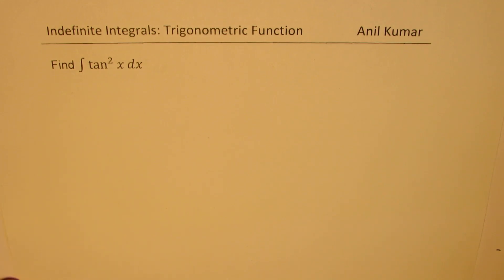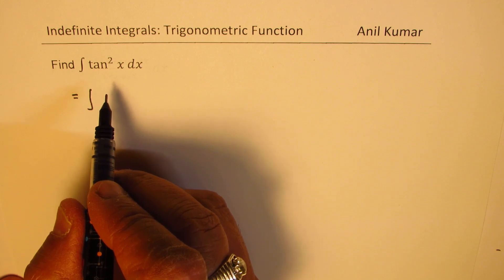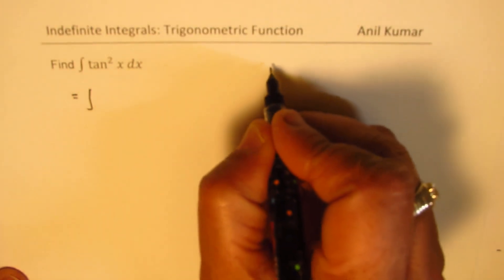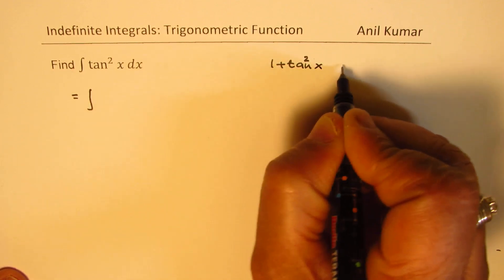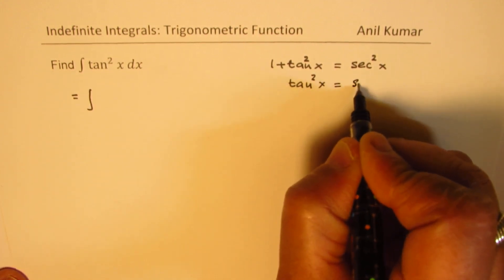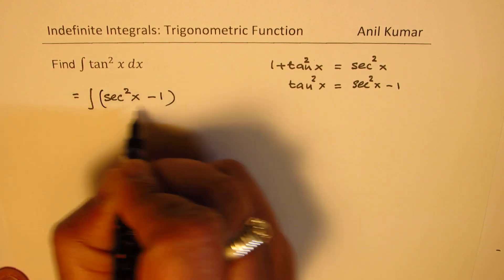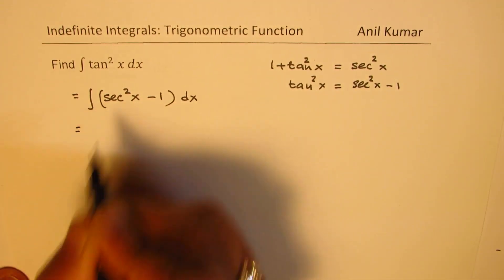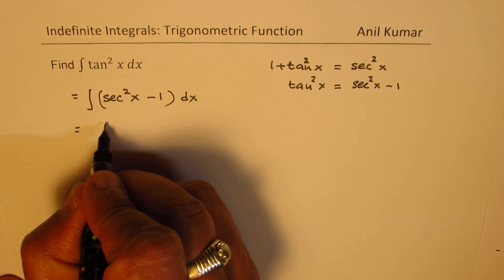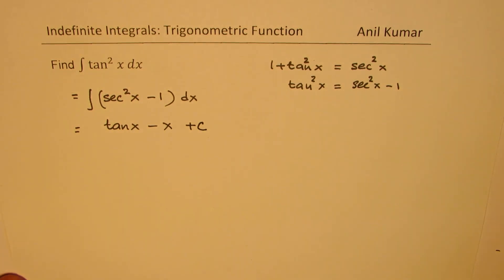Now let's look into part (c): find the integral of tan squared x. Here we use the Pythagorean identity: since 1 + tan squared x = secant squared x, tan squared x can be written as secant squared x minus 1. So we replace it with the integral of (secant squared x minus 1) dx. The integral of secant squared x is tan x, and the integral of minus 1 is minus x, giving tan x minus x plus c.